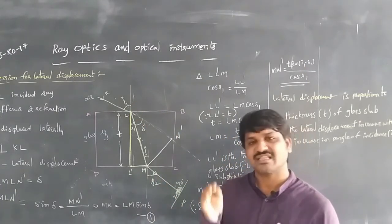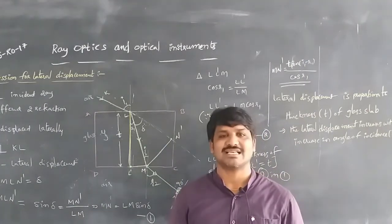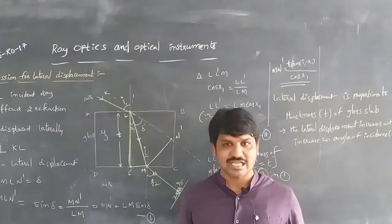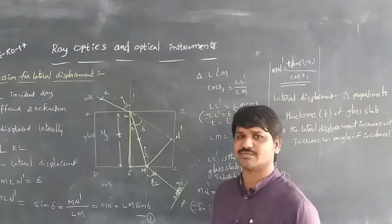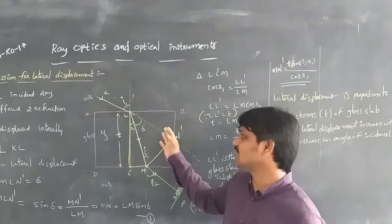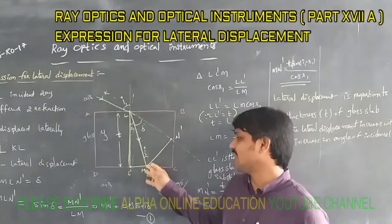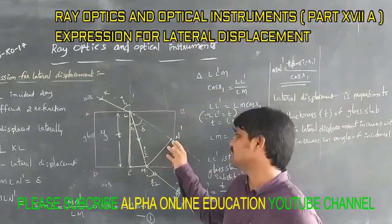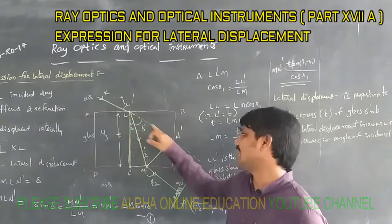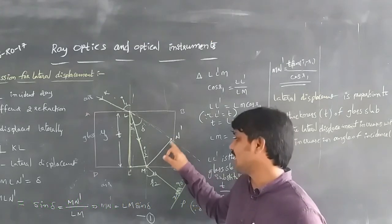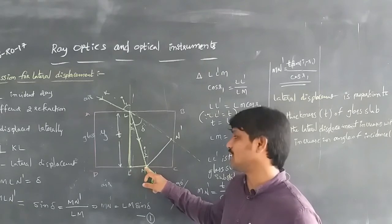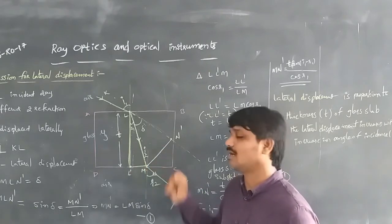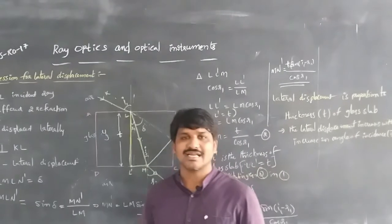This is about the lateral displacement when an incident ray passes through a glass slab or any other medium. By suffering two refractions, the light ray is laterally displaced from its actual path — that displacement is the lateral displacement. Thank you.